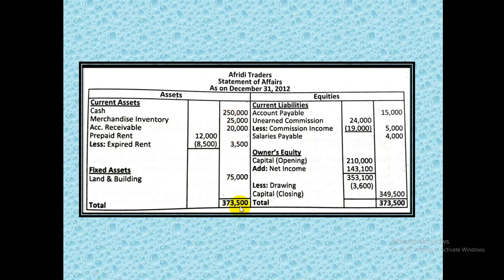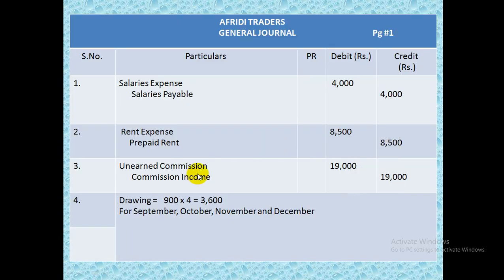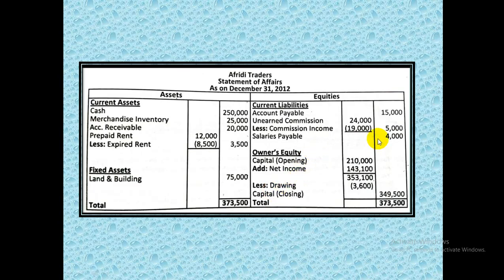For liabilities, we only look at December 31 data since we are preparing the statement of affairs on December 31. Accounts payable given is 15,000. Unearned commission on December 31 was 24,000, but in our adjusting entry we debited it by 19,000, so unearned commission remaining is only 5,000. You can remember that only the amount from the adjusting data — 5,000 — will come here, or you can show it as a subtraction in brackets.